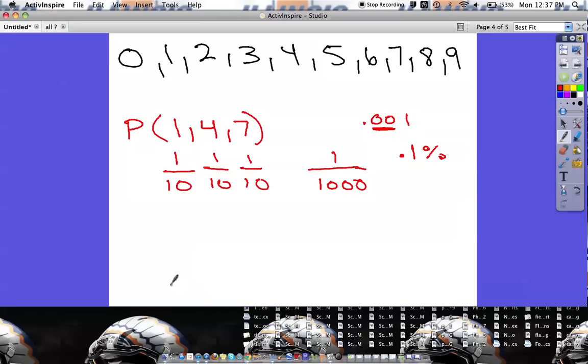Now here's the difference. If I say, what is the probability of getting a one, a four and a seven, and I say that none of the numbers can be used more than once. None of the numbers can be used more than once.